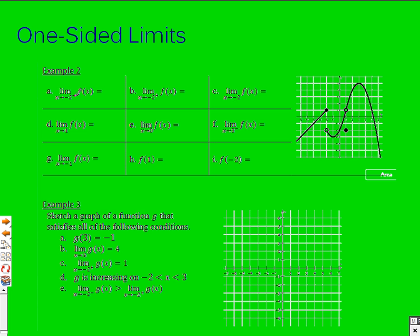For the first one, approaching negative 2 from the left-hand side, it looks like we're approaching a y value of 1. From the right-hand side, it looks like we're approaching a y value of negative 2. The left and right-hand limits are not the same, so the general limit cannot possibly exist. For number 4, the limit as x approaches 1 — I'm approaching the same value from the left and the right, so the limit is 1. At x approaching 0, same thing — approaching from left and right, the y value is negative 2.